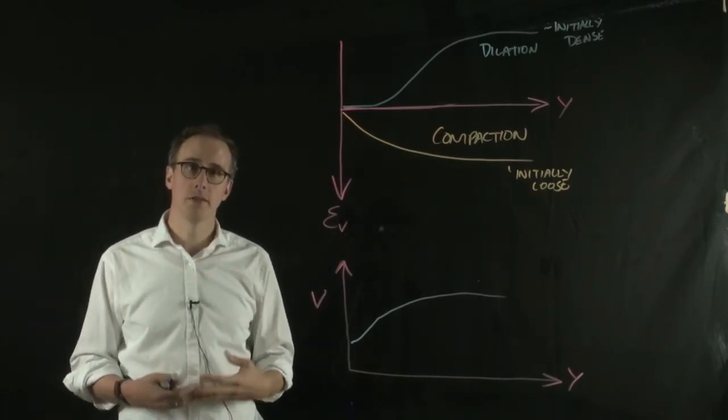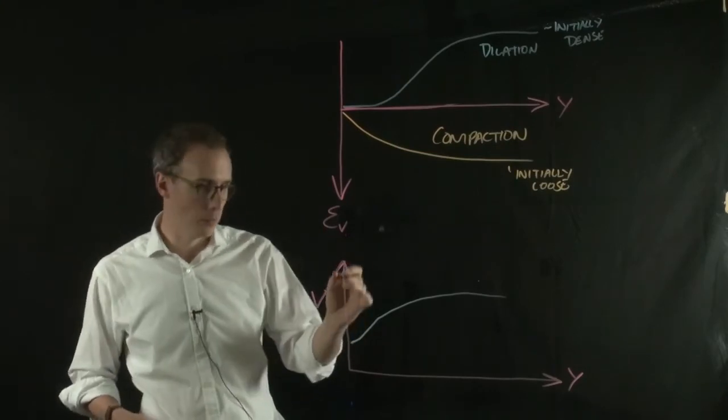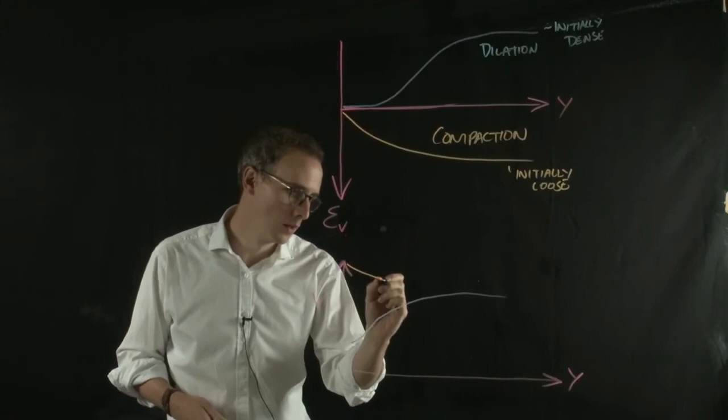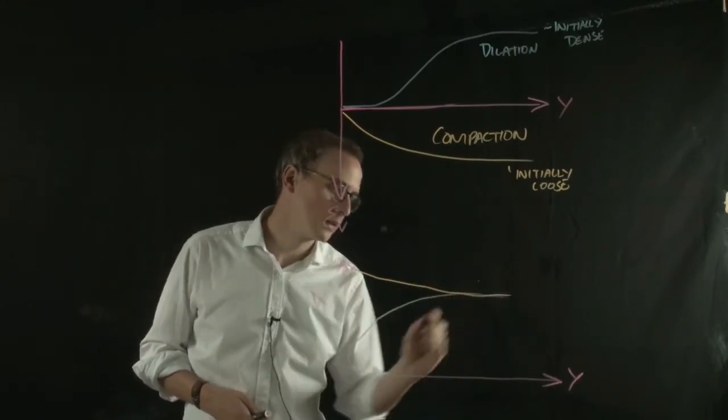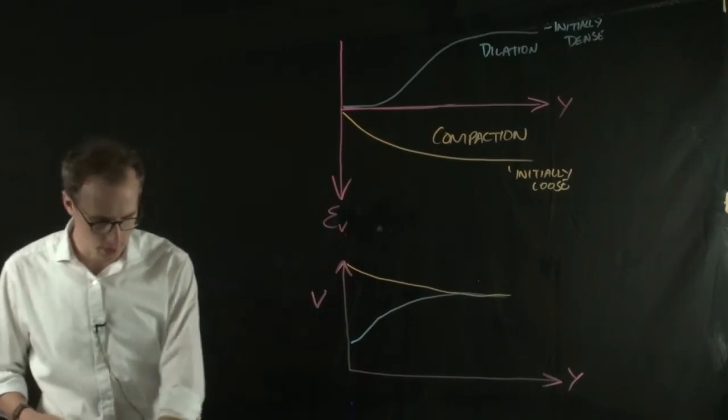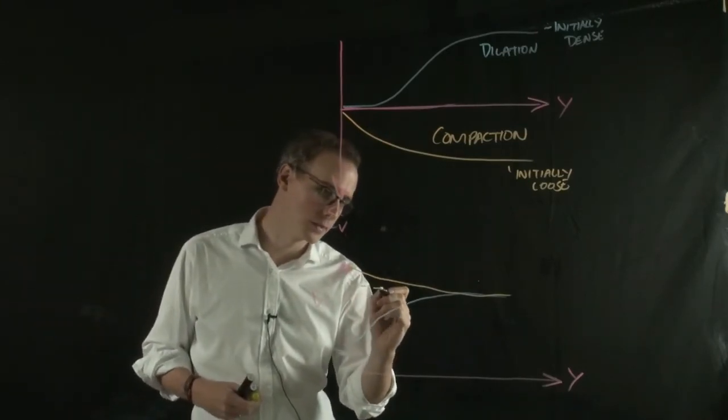What's interesting is that for the same material that's initially loose, we'd get a compaction or a decrease in specific volume, but that should theoretically decrease to the same point. And that point is what we would call the critical state, or the critical specific volume.